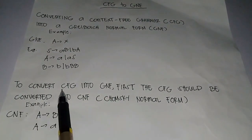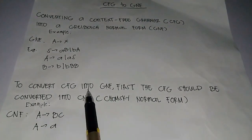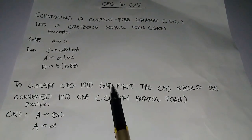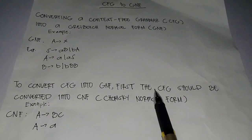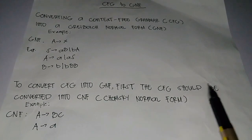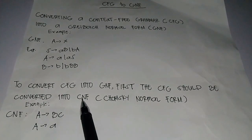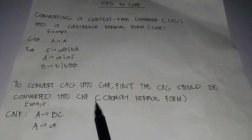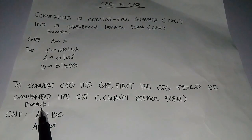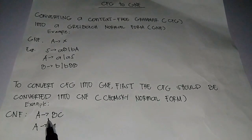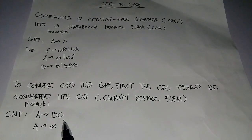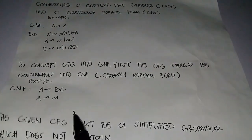To convert CFG into GNF, CFG can be converted into GNF. Example of GNF: D implies BE, and D implies A.